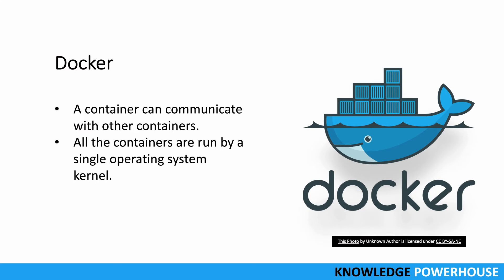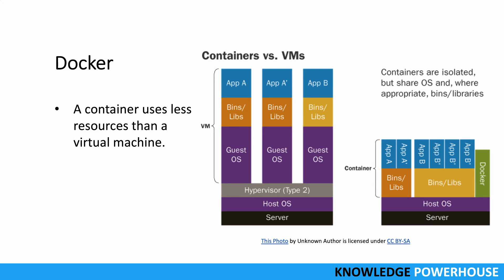All containers are run by a single operating system kernel — one kernel, multiple containers — which improves performance and maximizes use of compute resources on the same server. Containers also use fewer resources than a virtual machine. In a VM you need a heavy guest OS that consumes a lot of memory and disk space, whereas a Docker container has only the minimum set of libraries needed to run the application.